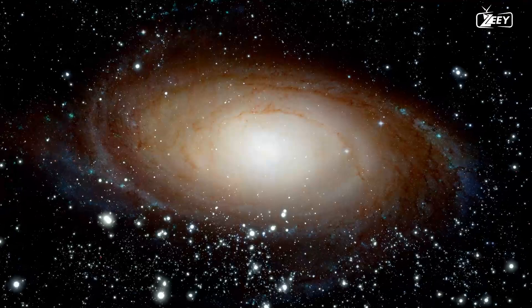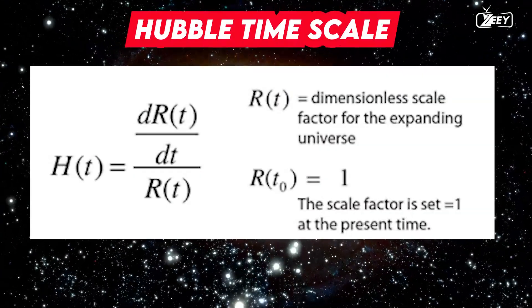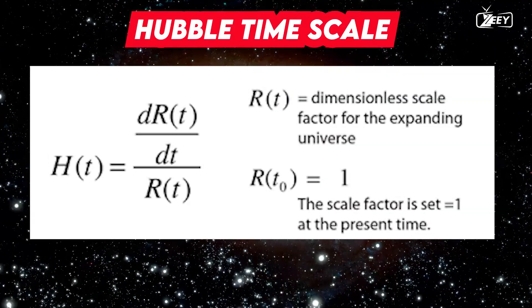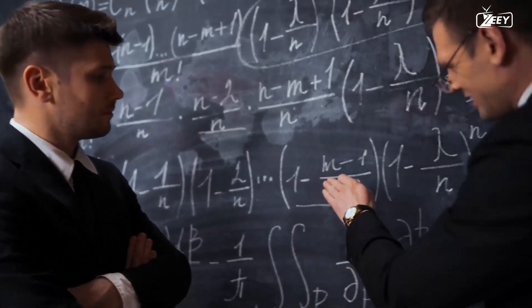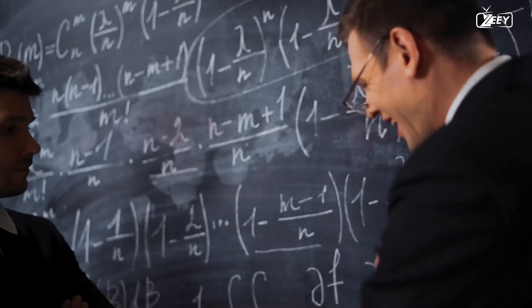When discussing the age of the universe, most people refer to the Hubble time scale, which estimates the duration of time over which this expansion has happened. This number can be thought of as the mathematical inverse of the Hubble constant.